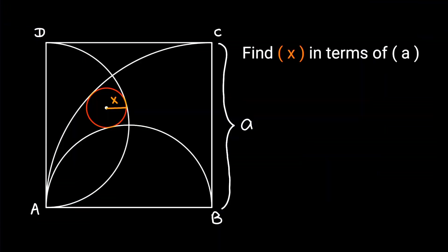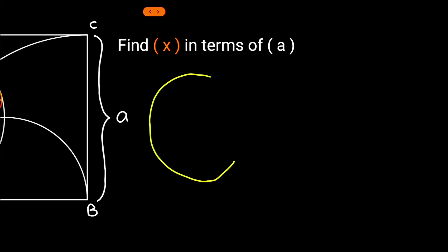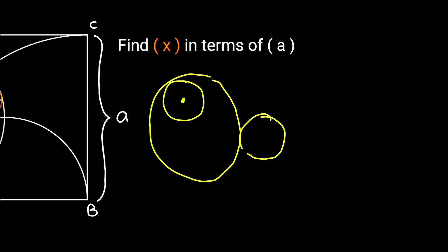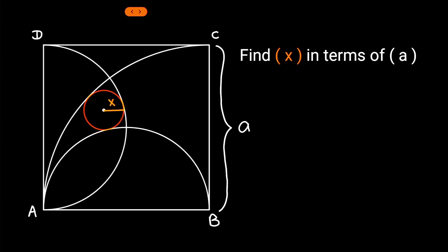First of all, we will utilize the fact that the orange circle is tangent to the semicircles and the quarter circles. Recall this theorem: if there is a bigger circle and another circle tangent to it either externally or internally, the center of the smaller circle, the center of the bigger circle, and the tangent point are all collinear — in both cases these 3 points would be collinear.